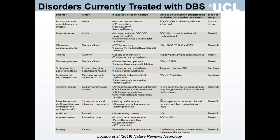An important point is that although we talk about DBS of a specific target, the rationale for DBS is based on postulated circuit dysfunction in each of these disorders — stimulation of the pathophysiological circuit, which in Parkinson's disease is the motor circuit, and in obsessive compulsive disorder is the motor and limbic frontostriatal circuits. The same disorder can be treated with different targets, and different disorders can be treated with DBS of the same target.